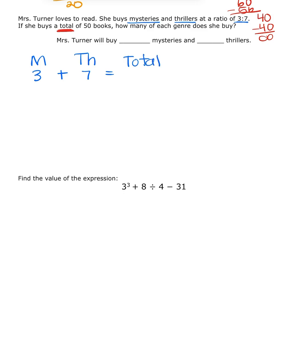So, what is 3 plus 7? 3 plus 7 would be 10. So, if there's a total of 50 books, I'm looking for a total of 50. I need to skip count my 10, my total, for my ratio, all the way down until I get to 50. So, let's do that together. So, we have 10, 20, 30, 40, 50. So, I'm at my level where I have 50 total books, right?